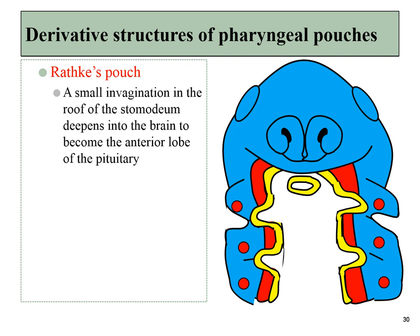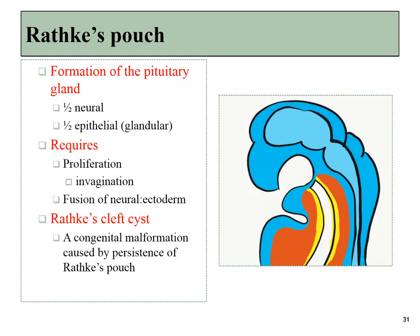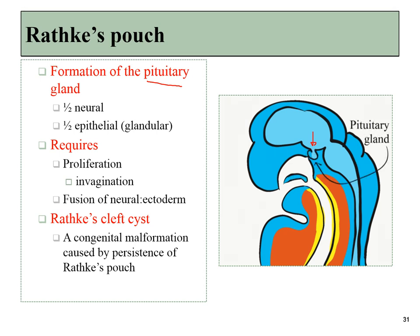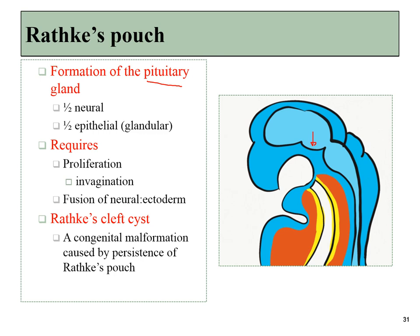Another pouch develops as a singular one along the roof of the developing pharynx, called Rathke's pouch, which will turn into part of the pituitary. The pituitary develops in two halves. The part from Rathke's pouch is epithelial — it came from the endoderm — and this forms the glandular part of the pituitary, or the anterior half. The posterior pituitary is actually a growth from the brain, forming the neural half, but ultimately these two tissues will fuse into a single structure known as the pituitary gland. Under the microscope, the anterior and posterior halves look very different because one is derived from endoderm and the other from neuroectoderm.